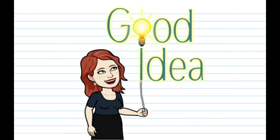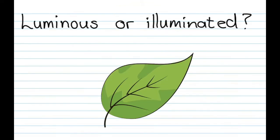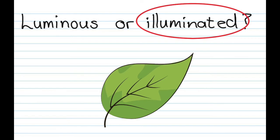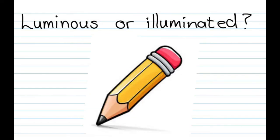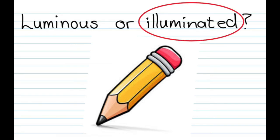Let's do some examples. Since leaves don't give off their own light, they would be illuminated. How about a pencil? Do pencils glow in the dark? Do they give off their own light? Of course not — so they are also illuminated.